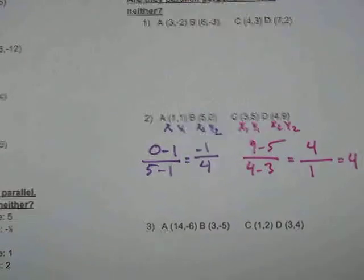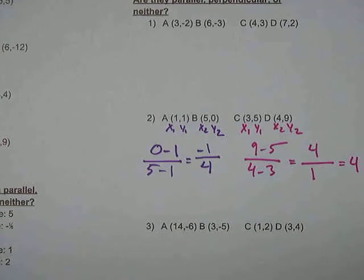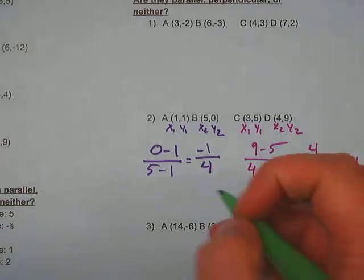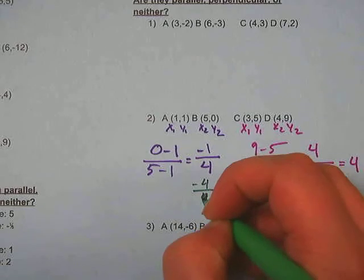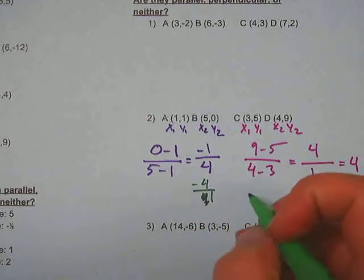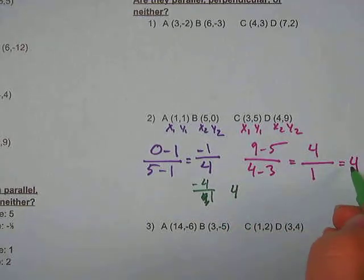So here we go, flipping the fraction on negative 1 fourth gives us negative 4 over 1. And changing the sign gives us positive 4, which is the same as this slope here.